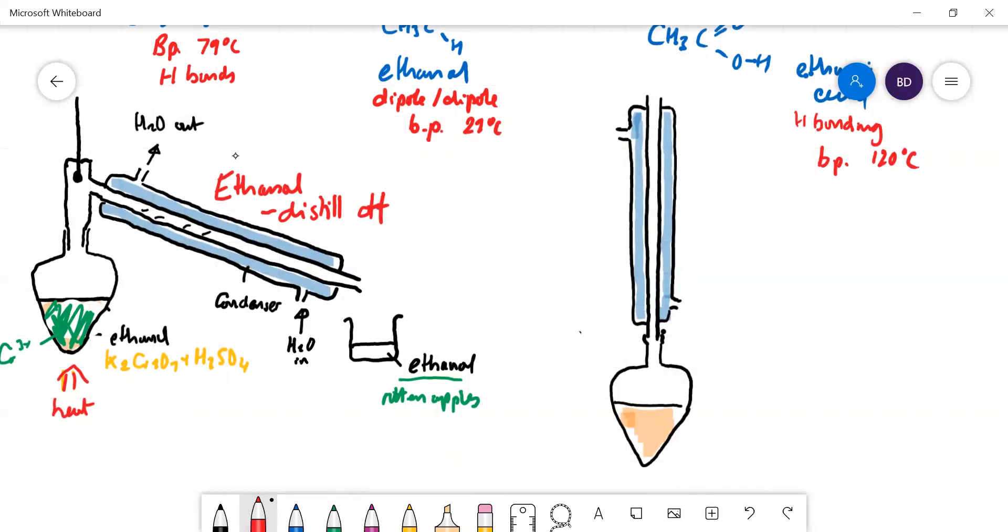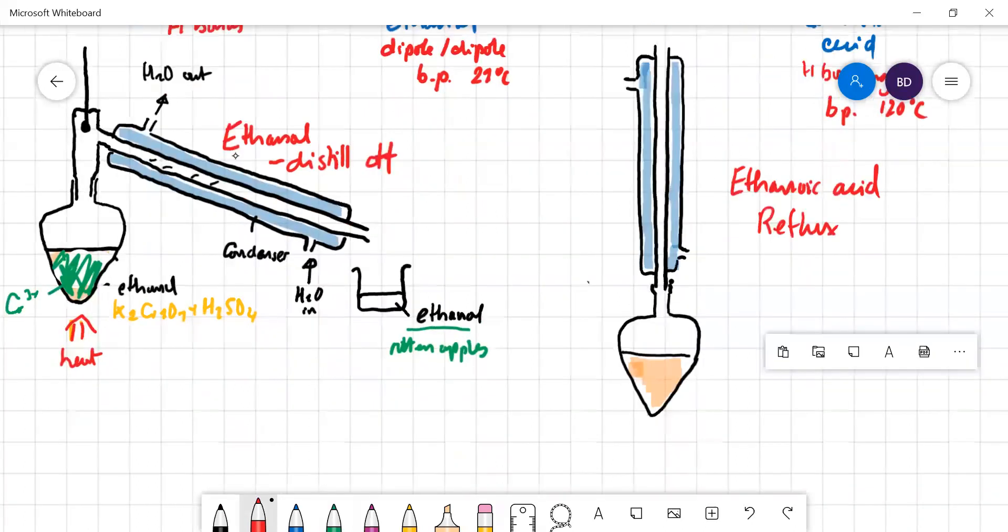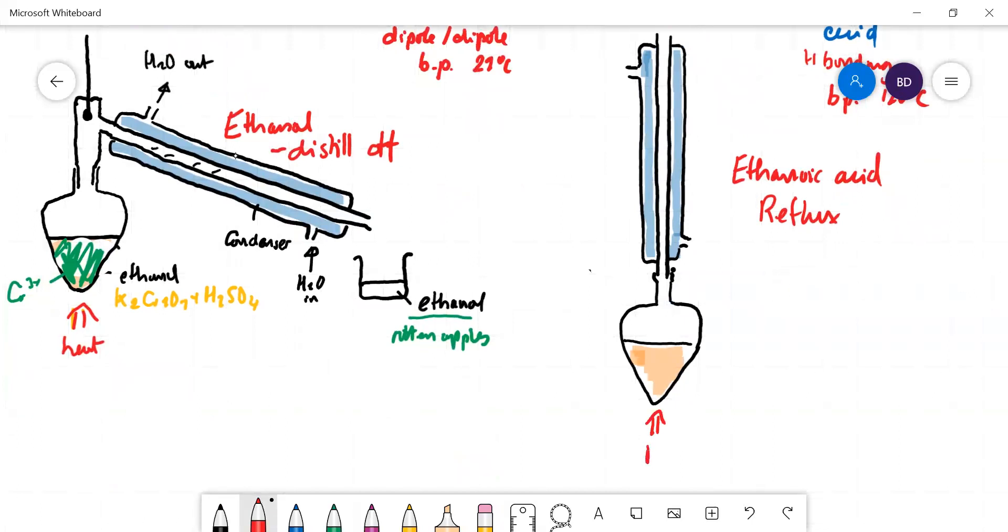If on the other hand you don't want to get the ethanal but want to oxidize it all the way to ethanoic acid, then you use this setup here. You have your condenser set in the upright position - this is called reflux position. You're heating with reflux. In this mixture here, you are going to oxidize your ethanol first to ethanal. The ethanal vapor is going to start going up here, but once it gets in the condenser it will condense and fall back down into the pear-shaped flask containing the potassium dichromate.